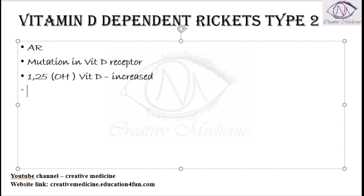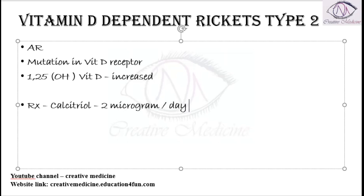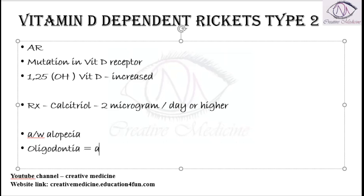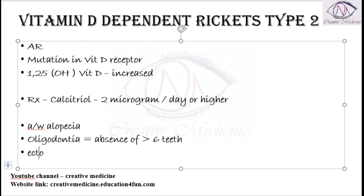Treatment of vitamin D dependent Rickets type 2: calcitriol is given at 2 micrograms per day or higher. If associated with alopecia or oligodontia — that is, ectodermal absence of more than 6 teeth — or other ectodermal defects, all these are seen in vitamin D dependent Rickets type 2.